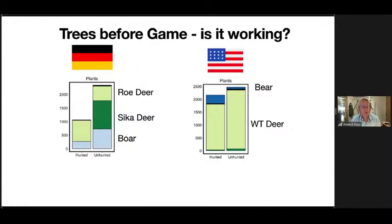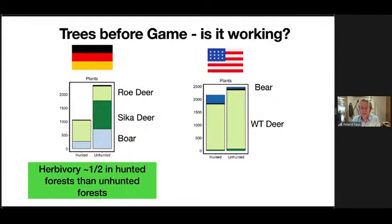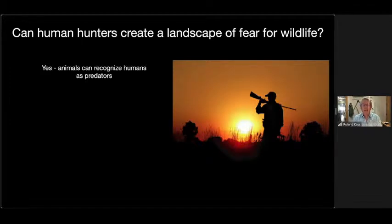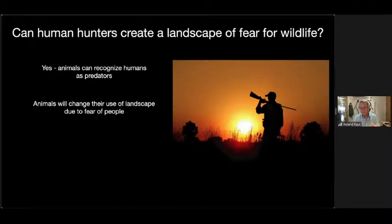Does the 'forest before game' philosophy work? Looking at hunted versus unhunted forest in Germany, hunted forests have about half or less the herbivory of unhunted forests — it's definitely working there. In the United States there's only about a 10% reduction of herbivory between hunted and unhunted forests, which is much less. So hunters in Germany are both reducing numbers and increasing fear, resulting in lesser herbivory on their forests.